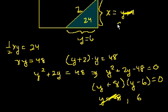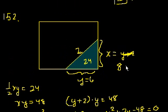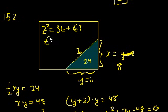y is equal to 6. x is equal to 8, right? And we can just confirm 6 times 8 is 48 times 1 half is equal to 24. And now we can use Pythagorean theorem to figure out z. So we'll get z squared is equal to 36. That's y squared plus 64, which is x squared. So z squared is equal to 100. z is equal to 10. Choice E.